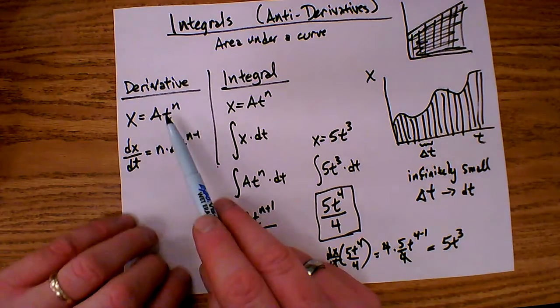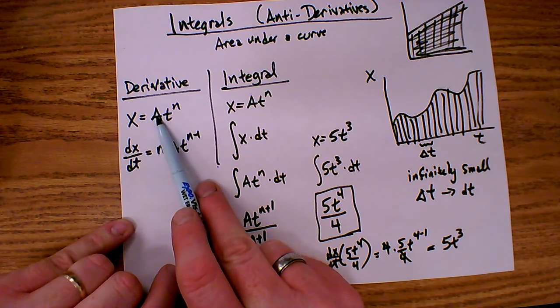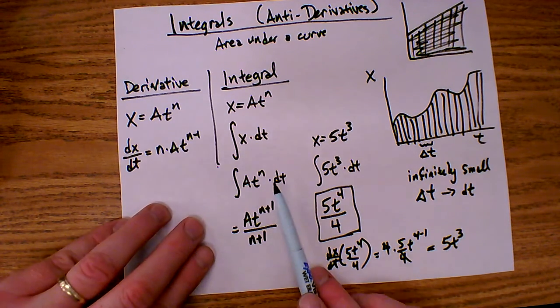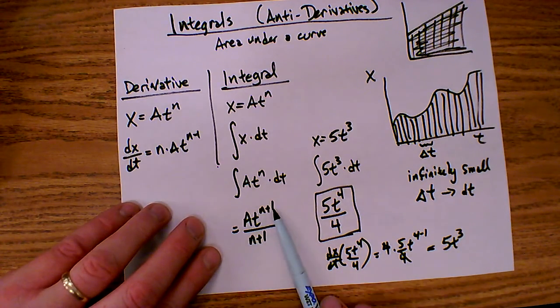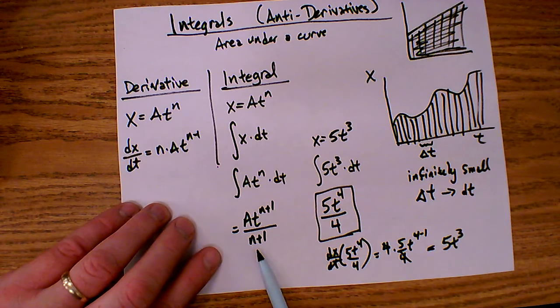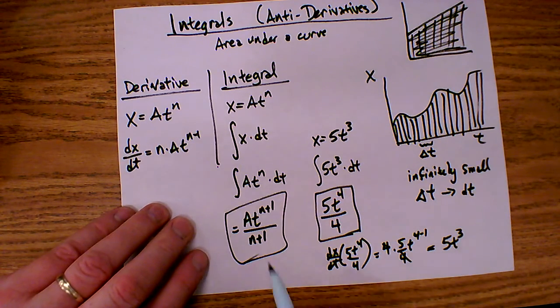So to take a derivative, you bring the exponent down in front, multiply, and reduce the exponent by 1. To do an integral, you increase the exponent by 1 and divide by the new exponent. That is how you do an integral.